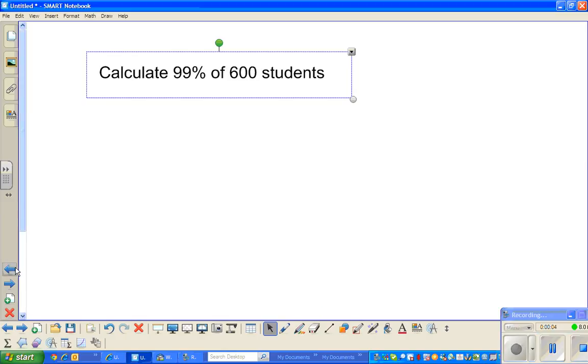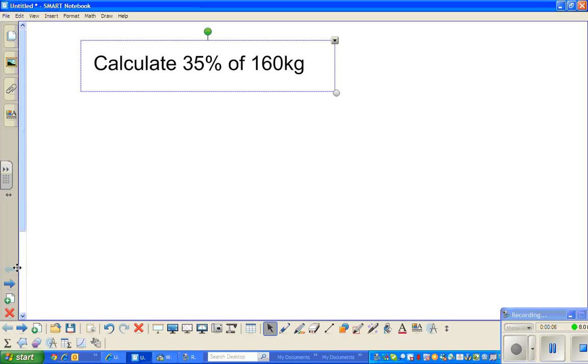In this video, I'm going to do four examples on calculating percent of a given quantity. This is the fourth in the series. This question asks you to calculate 35% of 160. I'm going to show you different ways of calculating percent and how to do it on a calculator.